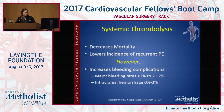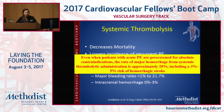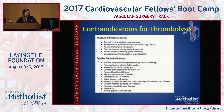Systemic thrombolysis — 100 milligrams TPA over two hours — has proven to decrease mortality and lower the incidence of recurrent PE. However, it increases bleeding complications significantly: intracranial hemorrhage zero to three percent, and major bleeding complications up to 21.7 percent. Even patients screened without contraindications to lysis can still have a high rate of major hemorrhage. Contraindications for lysis are all in Rutherford, which you should definitely know.